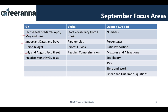In addition, do the e-book on important dates and days, the e-book on union budget, and practice with monthly GK tests. In the verbal section, start going through vocabulary e-books and the ATM e-book. First do para-jumbles, then move to reading comprehension. RC in MICAT is pretty easy compared to CAT or XAT — you can attempt almost 100% of RC questions with almost 90% accuracy.